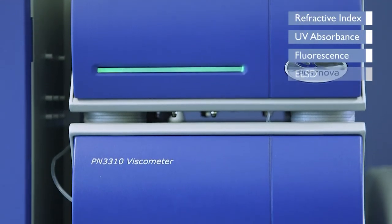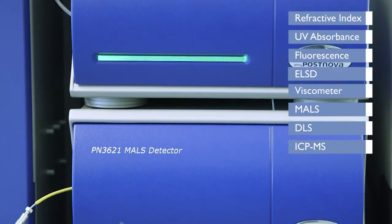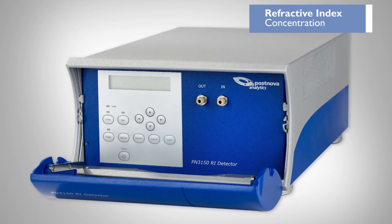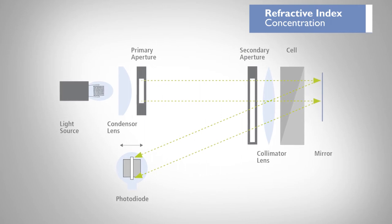The detection options on the Postnova platform are extensive and allow full characterization of the separated species. The Postnova RI detector is a high-sensitivity concentration detector, which is ideal for polymer and protein applications.